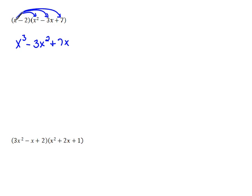Now we've completely distributed this x and we're done with it. But we have to distribute the negative 2 also. So negative 2 times x squared would be negative 2x squared. Negative 2 times negative 3x would be positive 6x. And negative 2 times 7 would be negative 14.